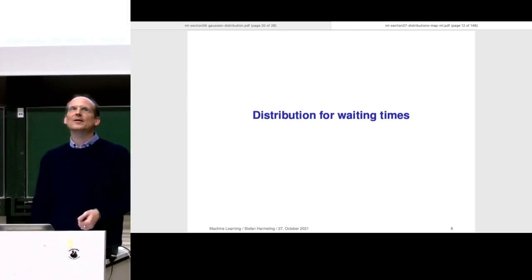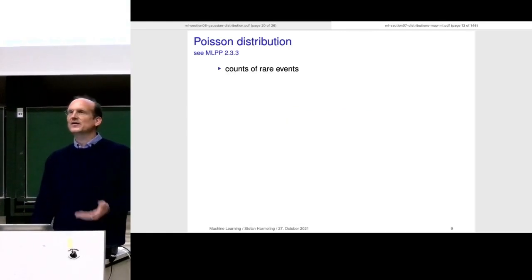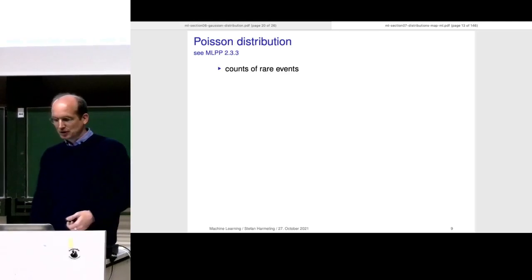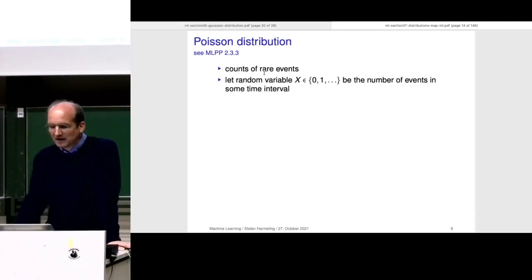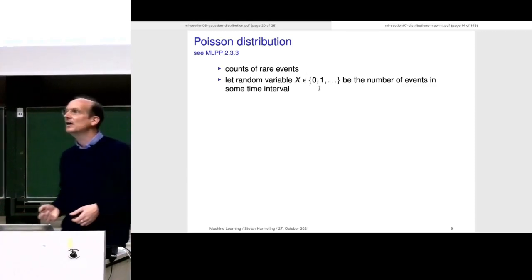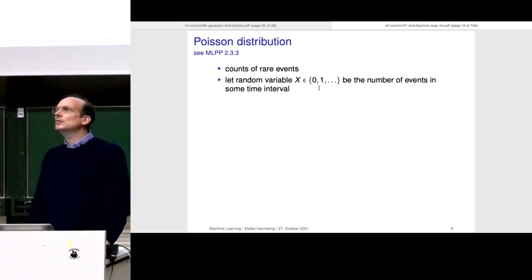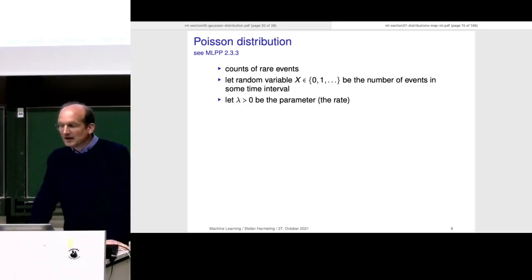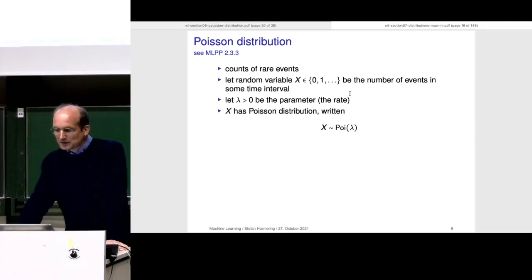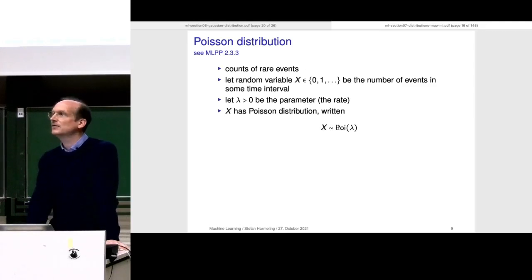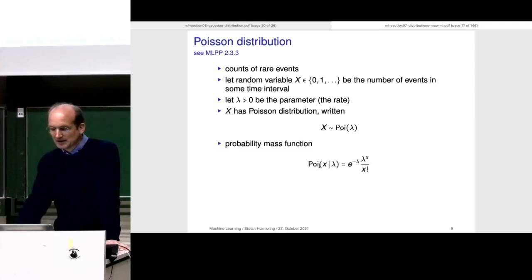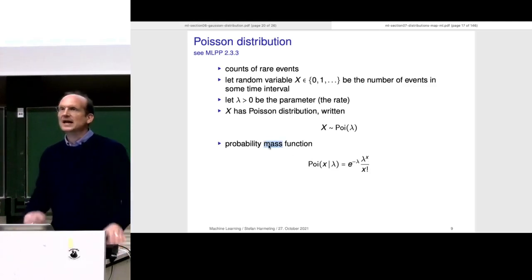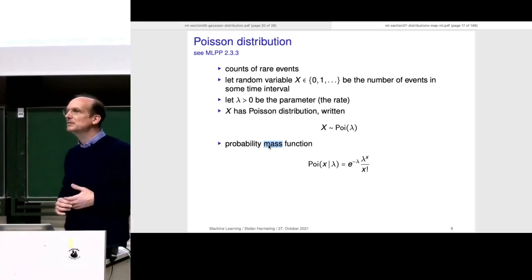There's the Poisson distribution, included for completeness. It's for counting rare events. The values it can take are zero, one, two, three — all natural numbers including zero. It has one parameter called the rate, lambda. We write x ~ Poisson(lambda). It has a probability mass function, not a density function, because it's a discrete distribution with countably infinite possibilities.